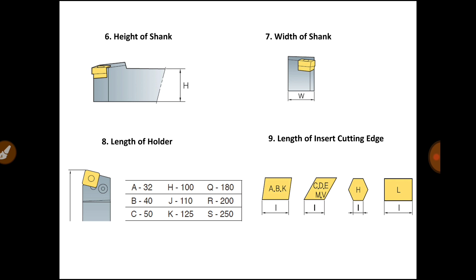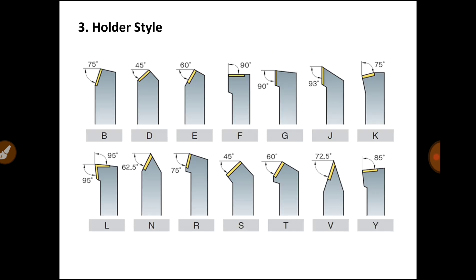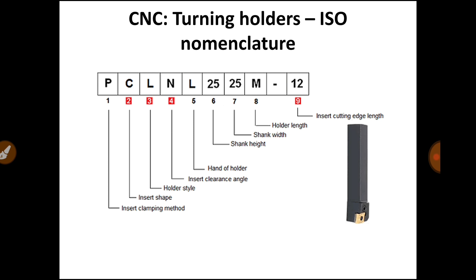The last location, location 9, denotes the cutting edge length of the insert. The insert has a certain cutting edge with a specific length. Here you can see different shapes of the insert and their cutting edge lengths. In our designation, 12 is written at location 9, meaning the insert has a 12 mm cutting edge length.